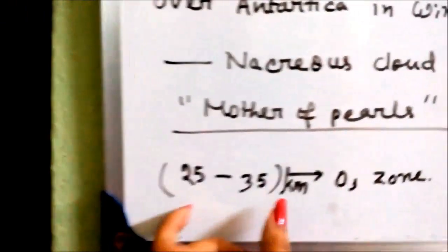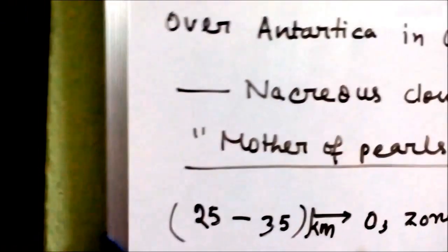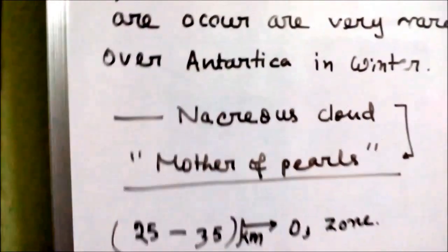The ozone layer, as mentioned, is found within the stratosphere. This particular structure of the ozone layer extends from about 15 to 35 km.